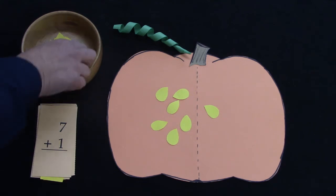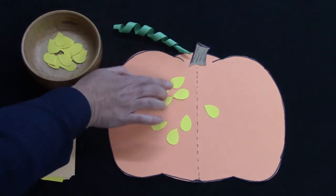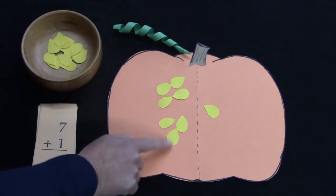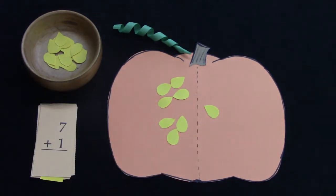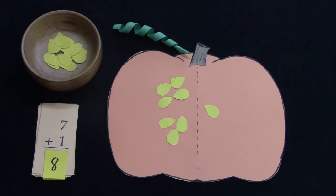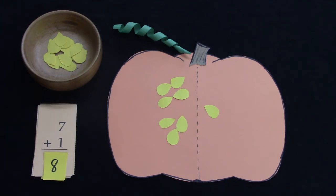Seven plus one. One, two, three, four, five, six, seven. One more would be how many? You're right. It is just the next number. Whenever we add one to a number, our answer is going to be the next counting number.